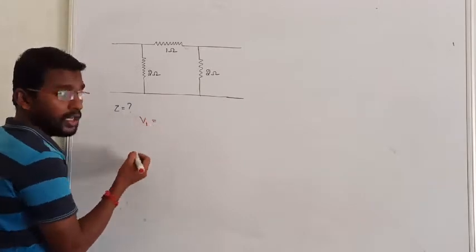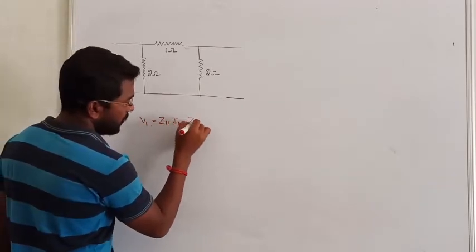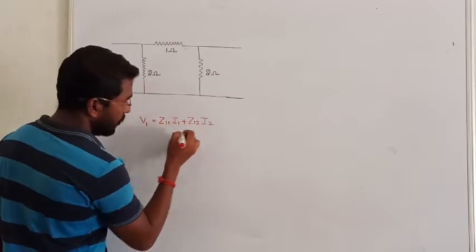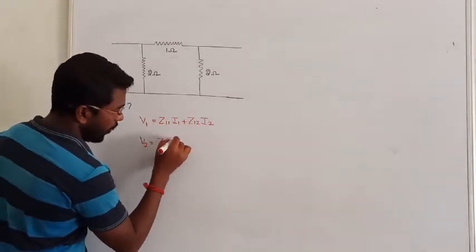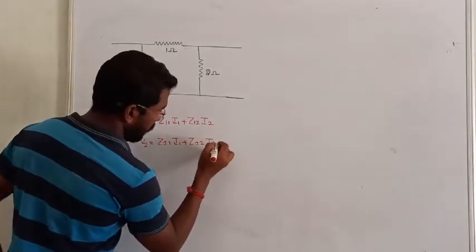Write down the equation first. We have to find the impedance, so impedance parameter can be written as V1 equal to Z11 I1 plus Z12 I2. Similarly, V2 can be written as Z21 I1 plus Z22 I2.